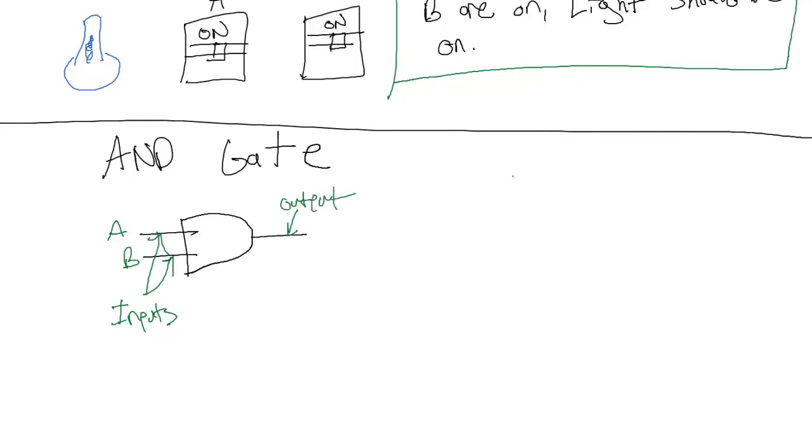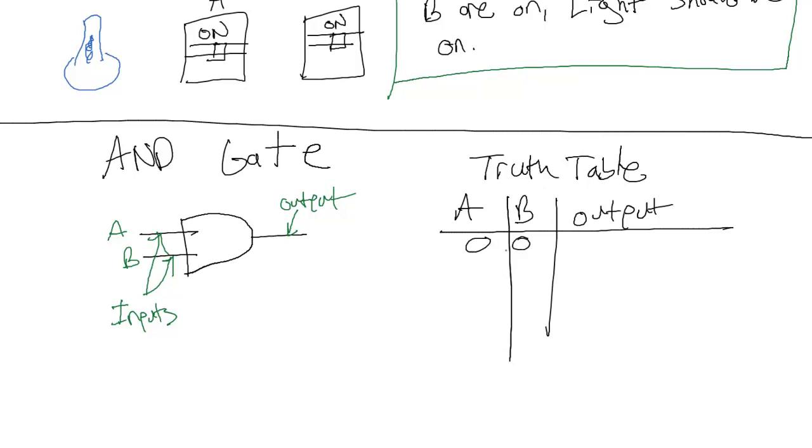And we describe logic gates by using a truth table. So we have A, B, outputs. And let's write all the possible input combinations. And the output of an AND gate is true when both A and B are true. It's going to be one and every other case it's zero.